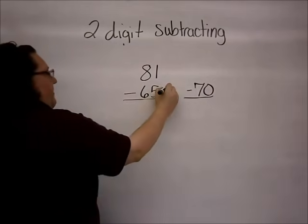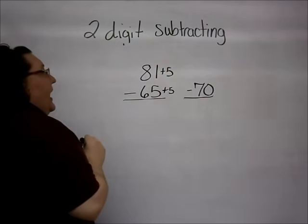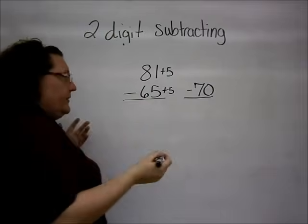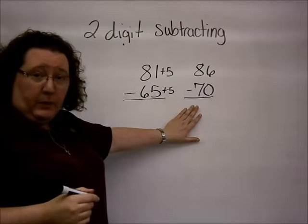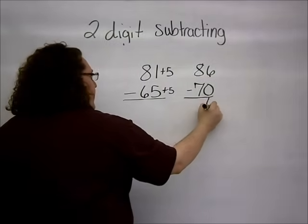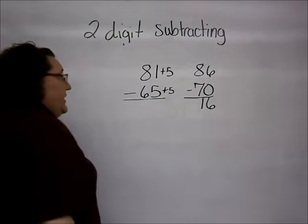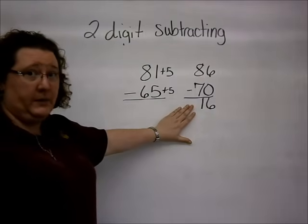In order to get to that 70, I had to add 5. So, I'm also going to add 5 to the number at the top. 81 plus 5 gives me 86. Again, I now have a problem that I do not have to borrow. 6 gives us here. I subtract and get 1 here. Again, I end up with the same answer of 16 for both problems.